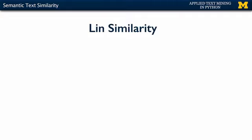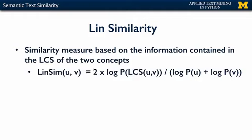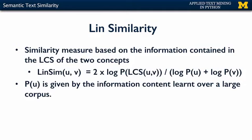You can use this Lowest Common Subsumer notion to find similarity — this was proposed by Lin and is called Lin similarity. The similarity measure is based on the information contained in the LCS of the two concepts. The formulation is: given two concepts U and V, take the log of the probability of the LCS, divided by the sum of the log probabilities of U and V. These probabilities are computed from information content learned over a large corpus.